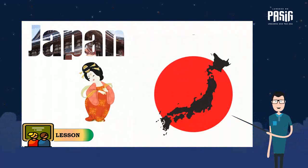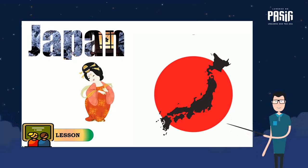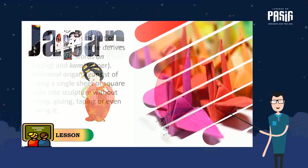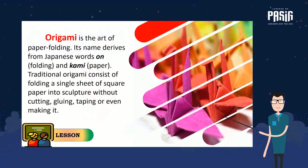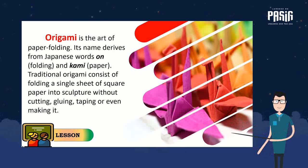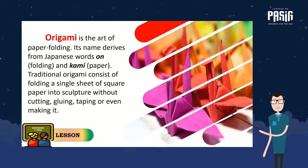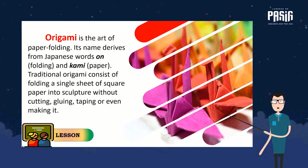Now let's move on to the arts and crafts of the Japanese. Origami is the art of paper folding. Its name derives from the Japanese words 'ori' meaning folding and 'kami' meaning paper. Traditional origami consists of folding a single sheet of square paper into a sculpture without cutting, gluing, or marking it.